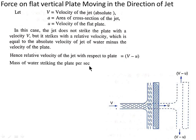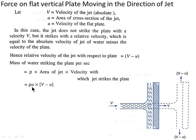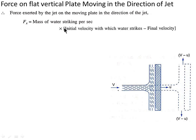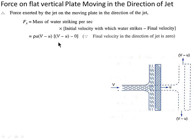Mass of water striking the plate per second is equal to rho into area of jet into velocity with which the jet strikes the plate, so it equals rho into A into (V minus U). Therefore force exerted by the jet on the moving plate in the direction of jet, Fx, equals mass of water striking per second into initial velocity minus final velocity. Therefore Fx equals rho A (V minus U) squared, since the initial striking velocity is (V minus U) and the final velocity is zero.